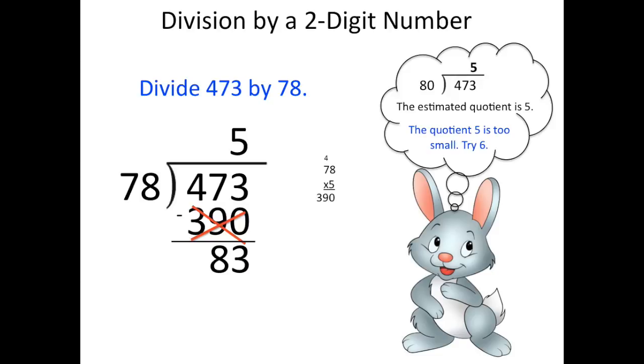So Mr. Bunny is now going to try 6. So we're going to cross everything out and multiply 78 times 6 off to the side, which is 468. So we're going to write that in and subtract. And when we subtract, now we have a number that's less than 78. So then that's our remainder, 6 remainder 5.